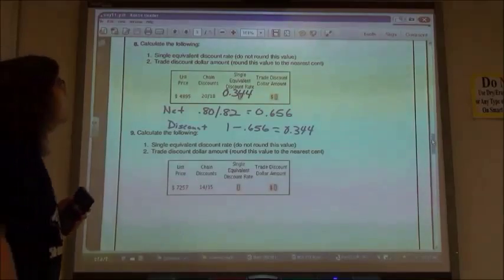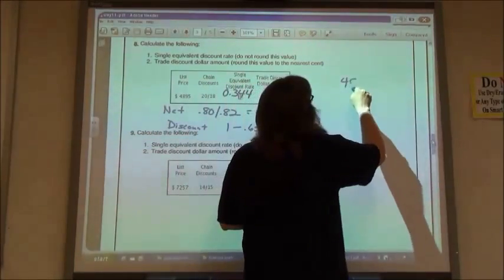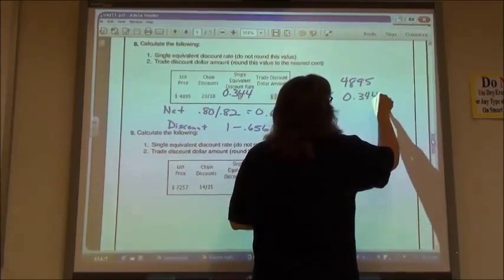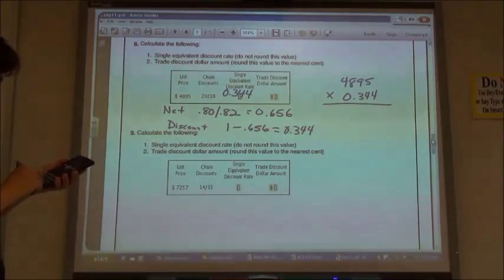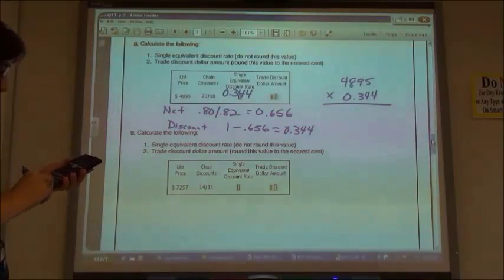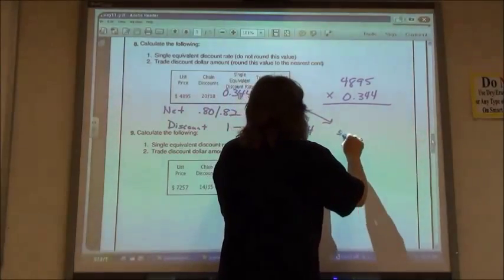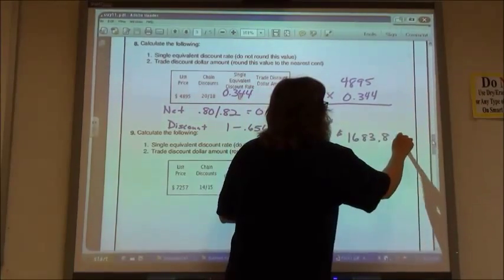In order to find my discount amount directly then, I'm going to take my list price, $48.95 times the 0.344. And so my answer, my discount amount is $1,683.88.